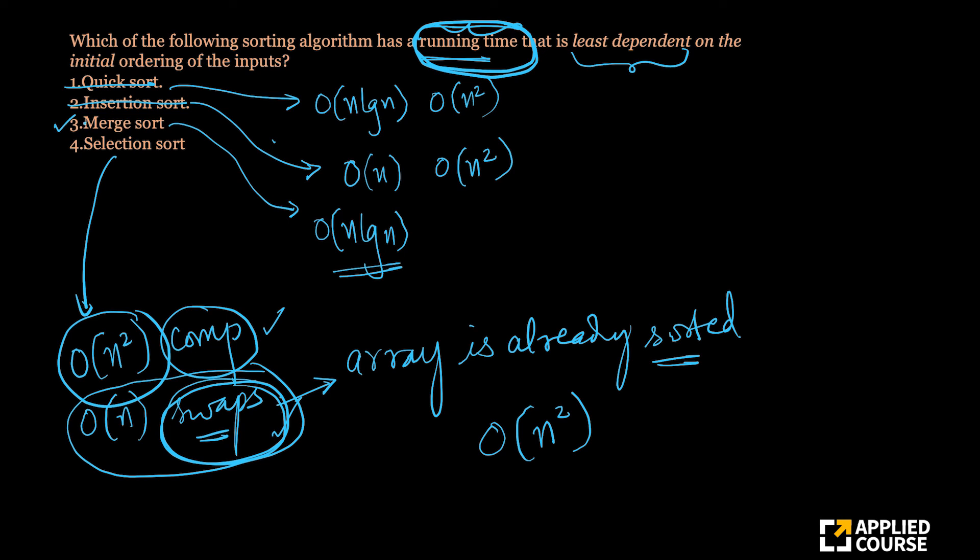See the question here is it is least dependent. The question is not that it is not dependent at all. The question here is which of these is least dependent. And it is talking about running time itself, not the complexity. So amongst these four, the least dependent would still be merge sort because selection sort, the running time would depend on swaps and number of swaps would depend on whether the array is already sorted or not.